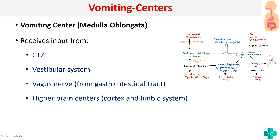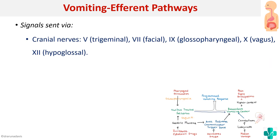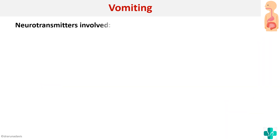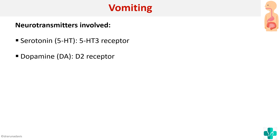Once the vomiting centers are activated, the act of vomiting requires the action of various muscles. The efferent pathways include cranial nerves 5, 7, 9, 10, and 12, the vagus and sympathetic nerves to the GI tract, and spinal nerves to the diaphragm and abdominal muscles. The key neurotransmitters involved are serotonin acting on the 5-HT3 receptor, dopamine acting on the D2 receptor, and substance P acting on the NK1 receptor. These receptors are important targets for anti-emetic drugs.